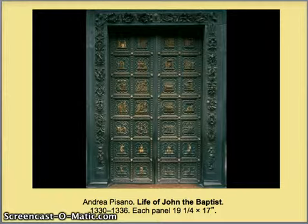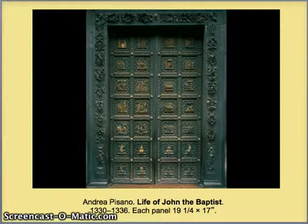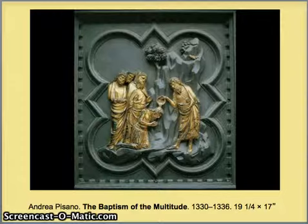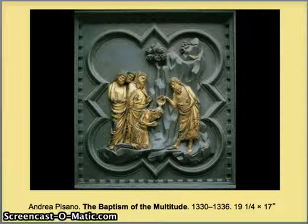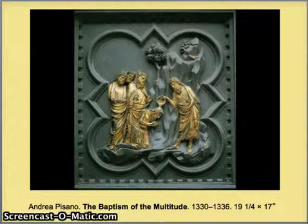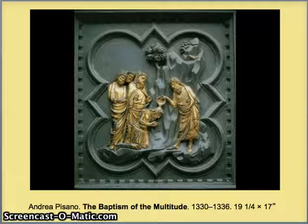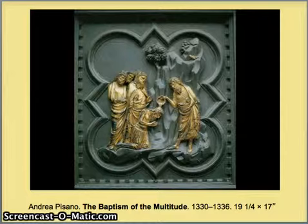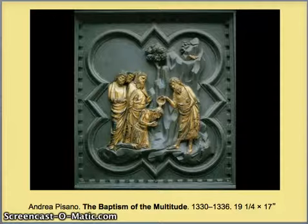If you look at it from a compositional standpoint, it's a little hard to tell what's going on. But if we look at just one of them, you can see that each is a work in themselves — a fine composition in its own right. They're made of bronze with gold gilding. Here we have the Baptism of the Multitude by St. John the Baptist, baptizing a group of people. Look at how the mountains are depicted in the background. Notice how the gold brings the figures forward, and how the artist has created a further sense of a three-dimensional feel by the folds of the fabric.